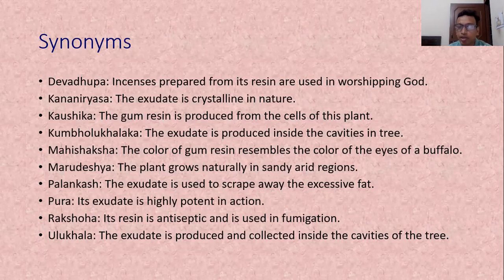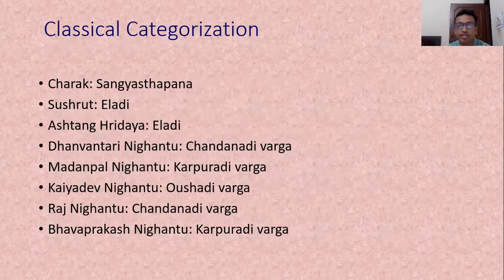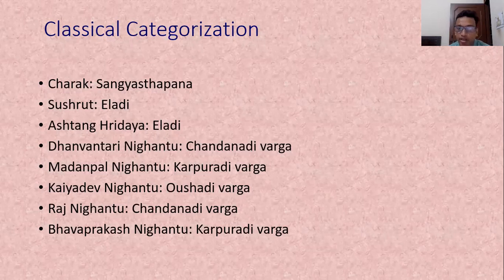The Latin name of this plant is Commiphora mukul. Classical categorizations: in Charaka Samhita it is mentioned in Sanghyasthapan Mahakasaya. According to Sushruta, it comes under Eladigan. Ashtanga Hridayam also mentions it in Eladigan. Dhanvantari Nighantu mentions it in Chandanadi Varga. Madhanpal Nighantu places it in Karpuradi Varga. Kaidev Nighantu in Osadi Varga, and Raj Nighantu in Chandanadi Varga.